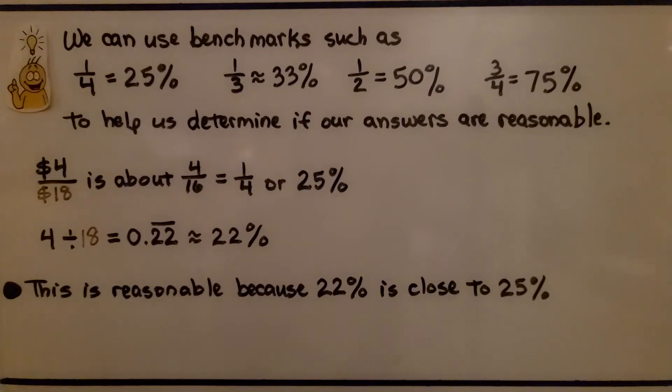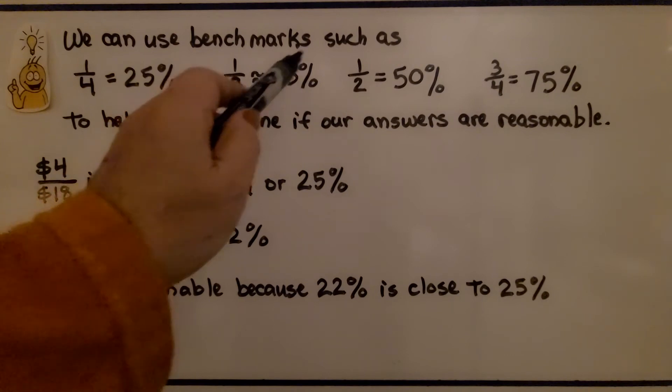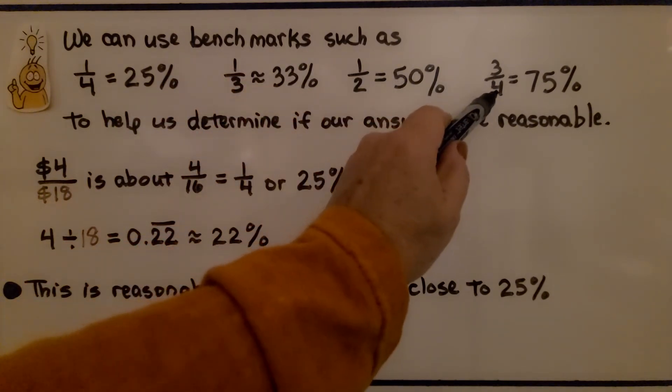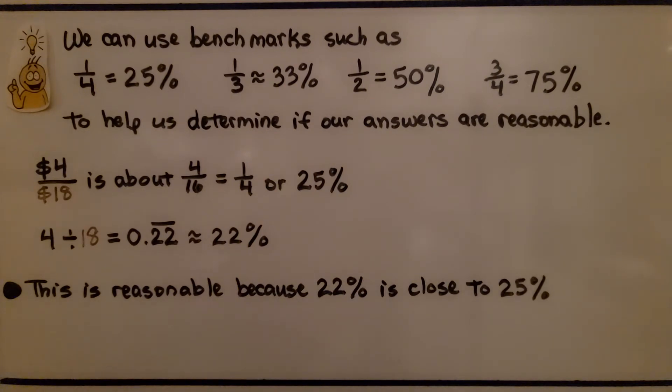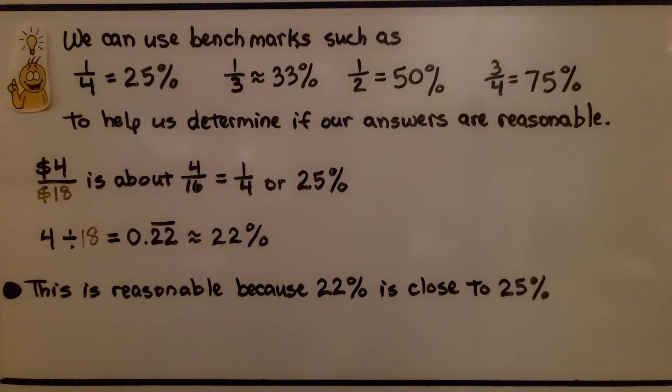We can use benchmarks such as one-fourth is equal to 25%, one-third is approximately 33%, one-half is equal to 50%, and three-fourths is equal to 75% to help us determine if our answers are reasonable. $4 divided by $18 as four-eighteenths is about four-sixteenths, which is very close, which is equal to one-fourth or 25%.